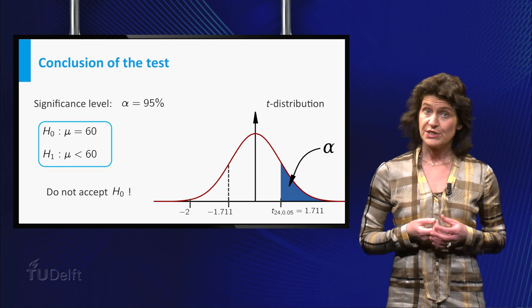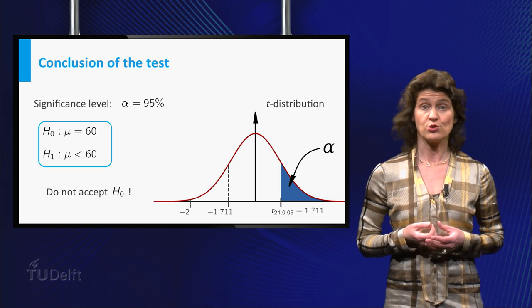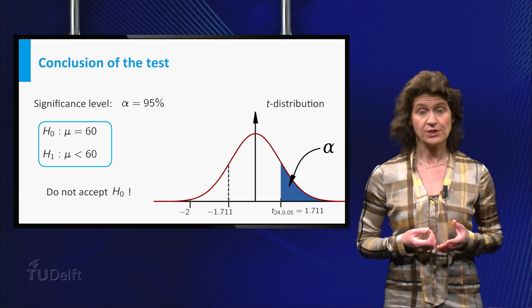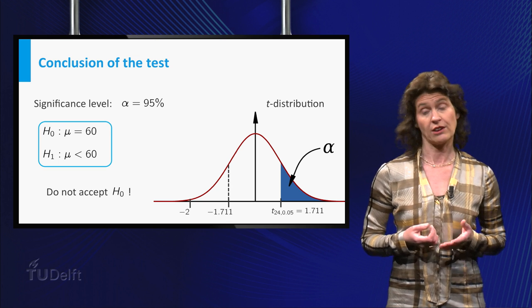So you can reject the null hypothesis that the school meets the national norm. The data seem to provide enough evidence to conclude that the school performs worse than other schools.